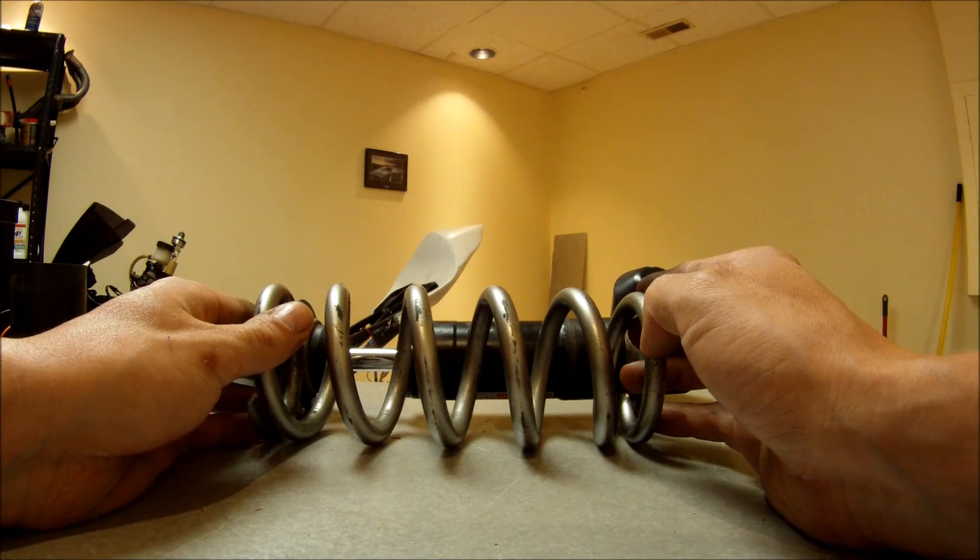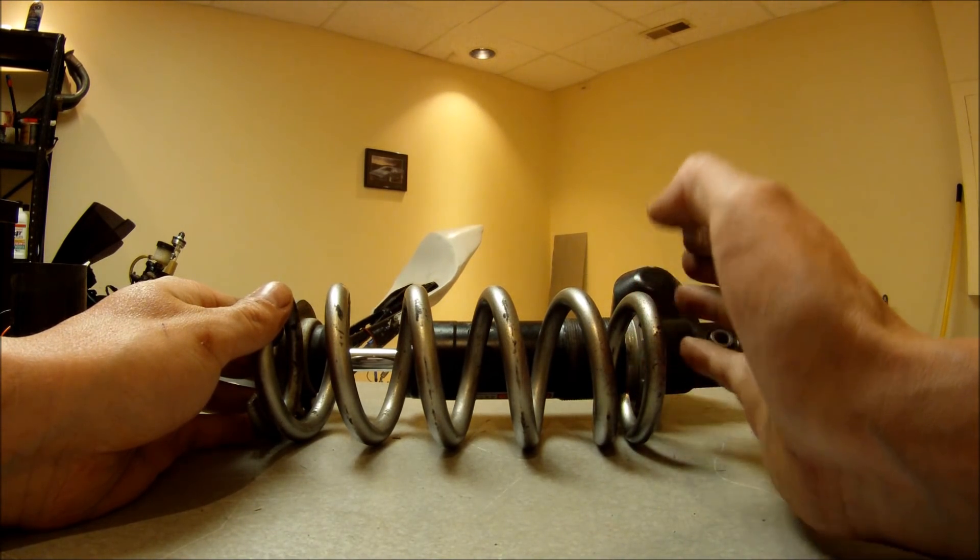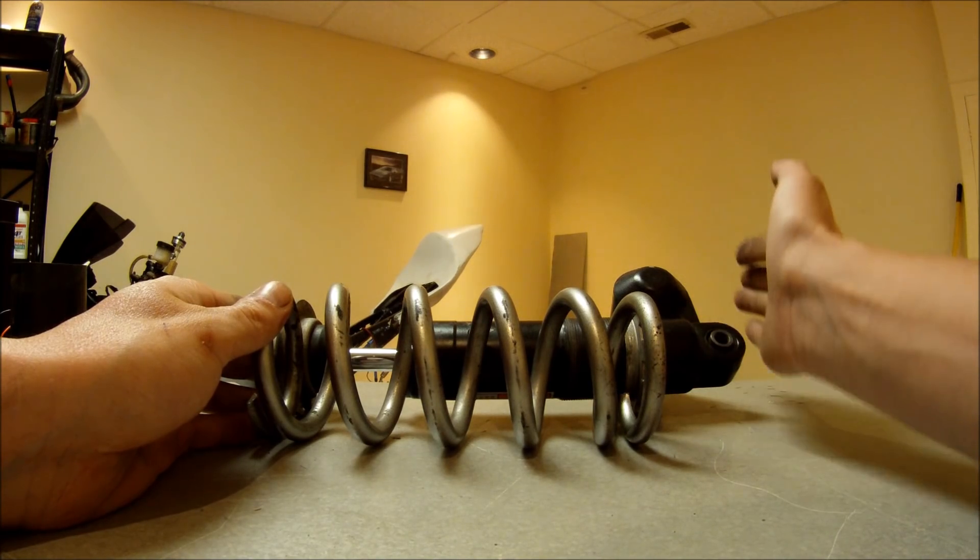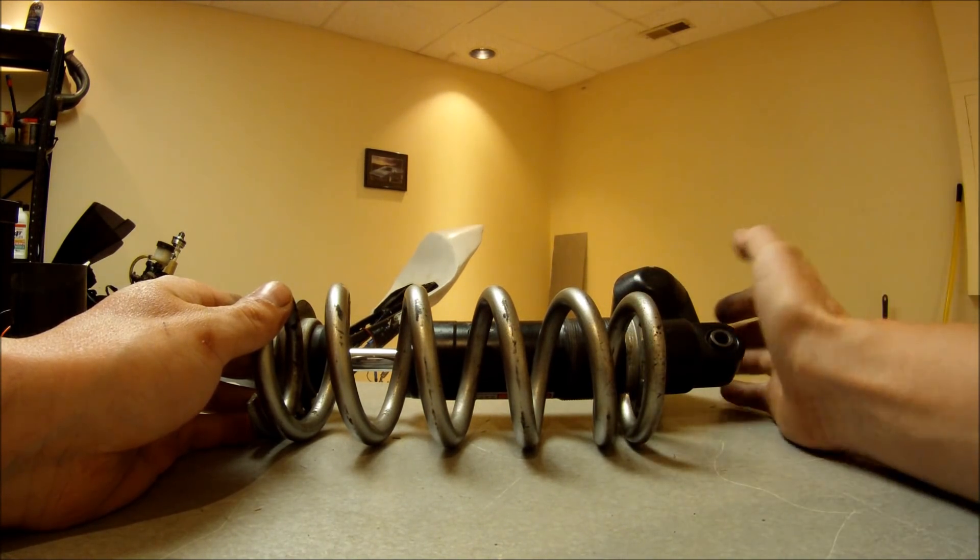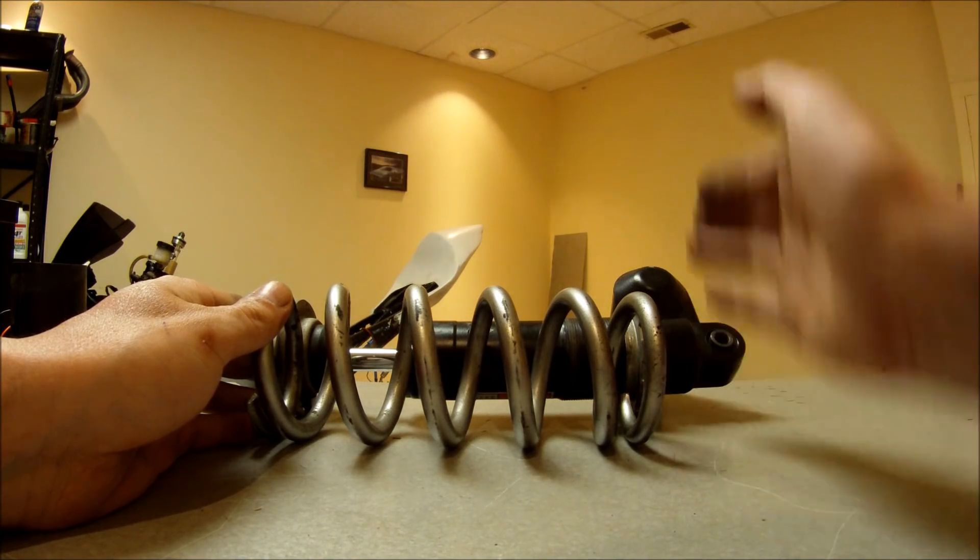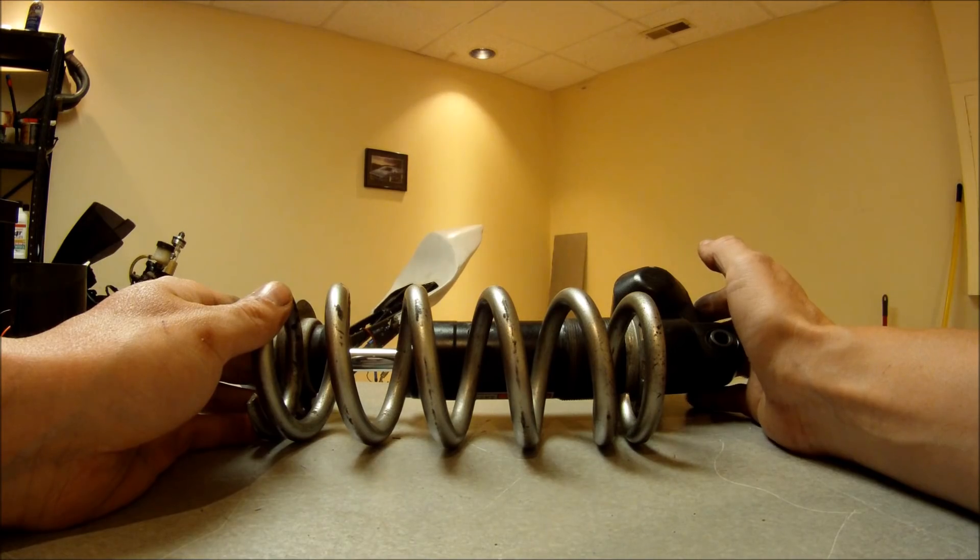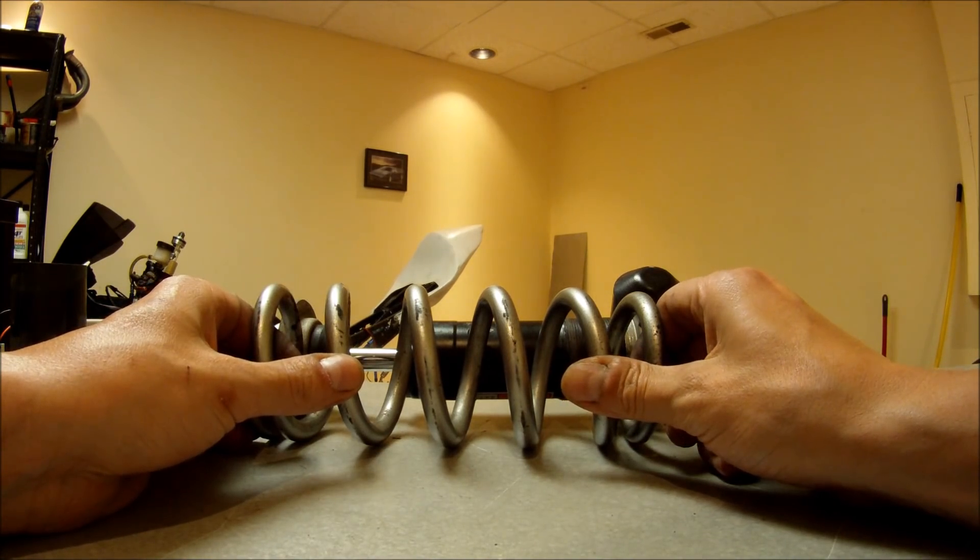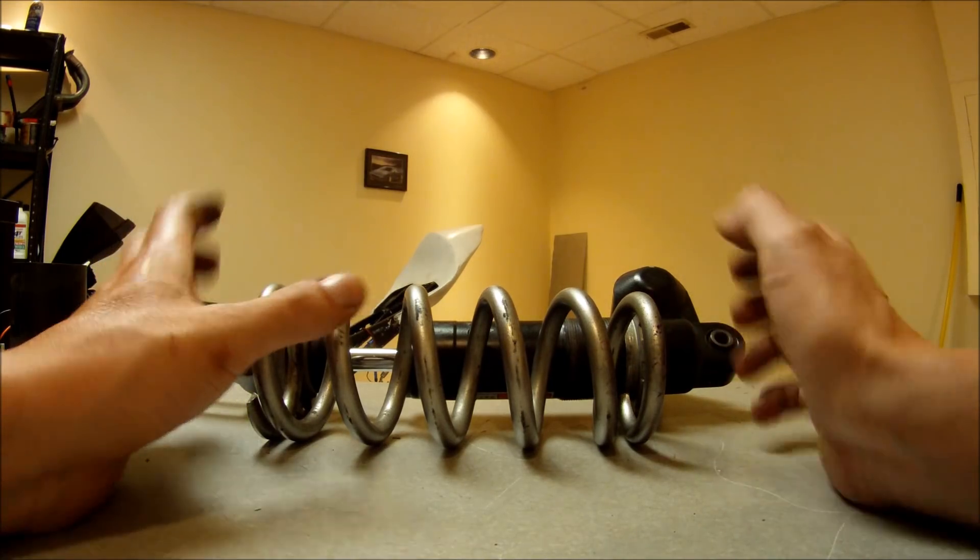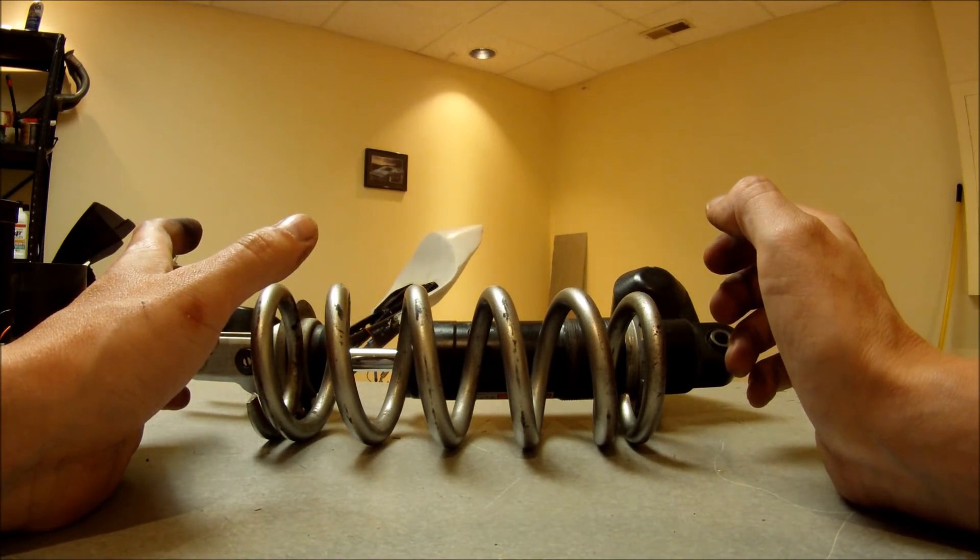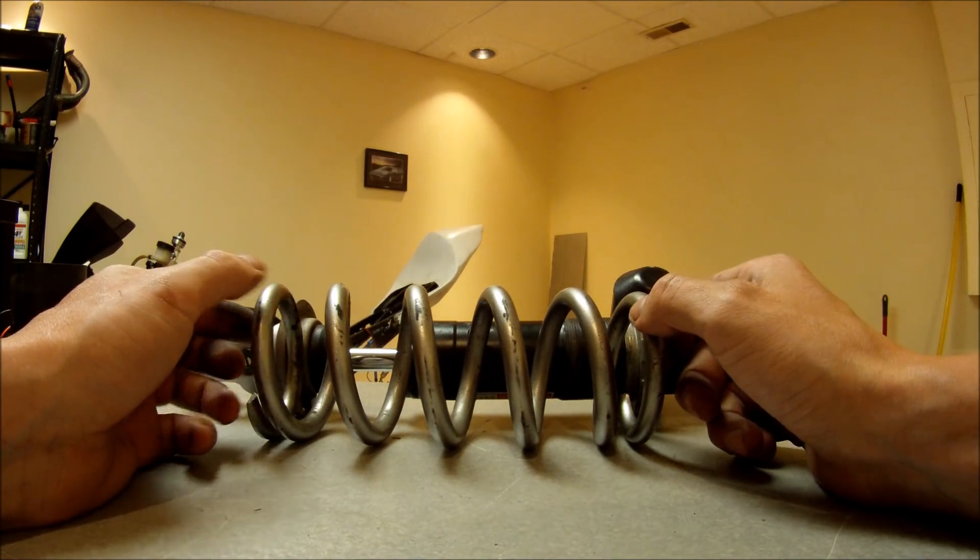When you set preload on both of them, they'll have the same preload - let's say 500 pounds. But if you put 600 pounds on the shock, they're going to behave differently. A lighter spring is going to be more comfortable and give you a softer ride. A shorter spring with a higher spring rate is going to give you a firmer ride, not as comfortable, but some of us don't care about comfort - we just care about performance.